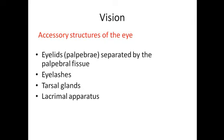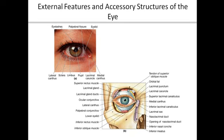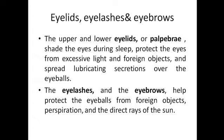Eyelids, or palpebrae, are separated by the palpebral fissure — upper and lower eyelids — along with eyelashes, tarsal glands, and lacrimal apparatus. The upper and lower eyelids shade the eyes during sleep, protect the eye from excessive light and foreign objects, and spread lubricating secretions over the eyeball. The eyelashes and eyebrows help protect the eyeballs from foreign objects, perspiration, and direct rays of the sun.